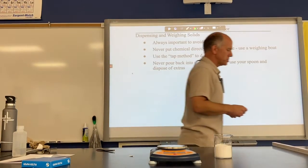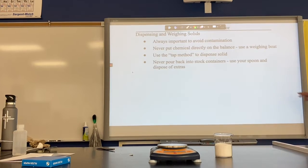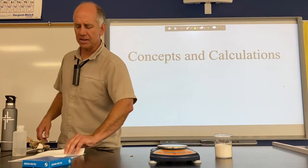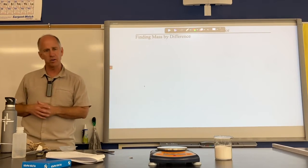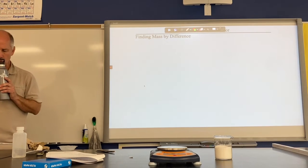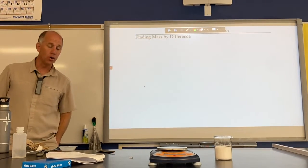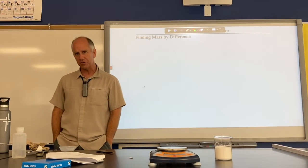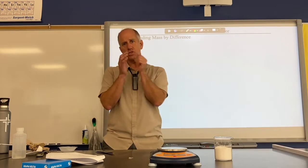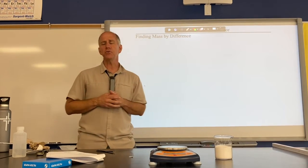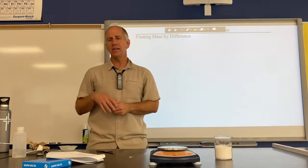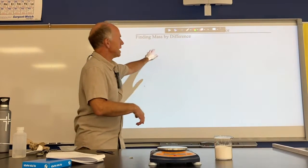We've gone over skills and techniques. Now we need to go over some concepts and calculations. This concept is very important: it's called mass by difference. Last time in class, when we graded our significant digit homework, we talked about a student weighing sugar on an inaccurate balance. We learned that if you weigh a container, then put the substance in it, and then weigh the container with the substance, you can make a broken balance accurate. That technique has a name: finding mass by difference.